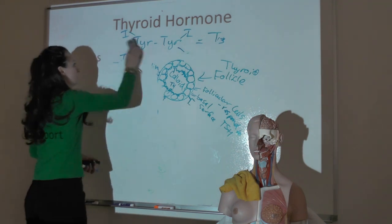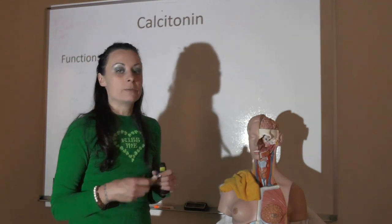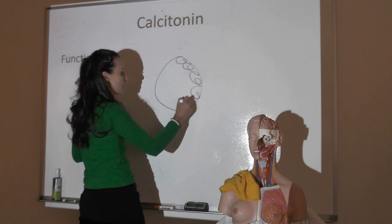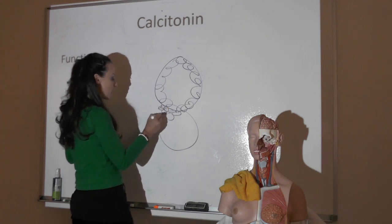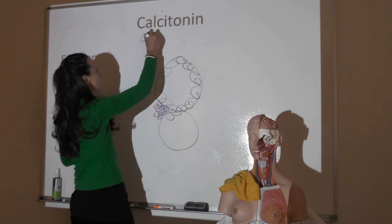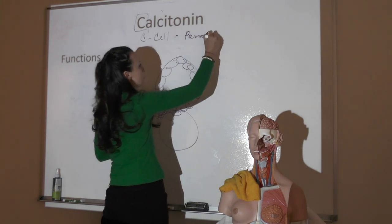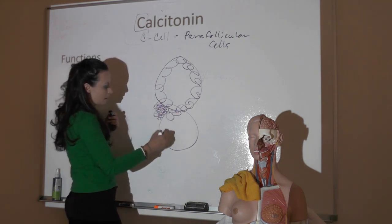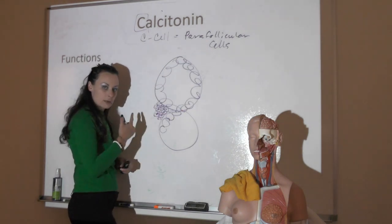That wraps up the HPT axis. Calcitonin, released from different cells in the thyroid, puts calcium into bone. Between the thyroid follicles are cells called parafollicular cells, or C cells—para meaning near the follicle. C cells are separate from the follicular cells, and they are the cells that release calcitonin.